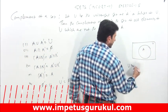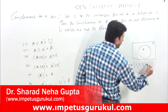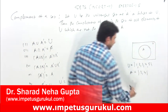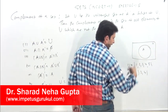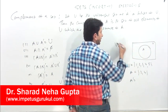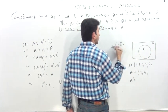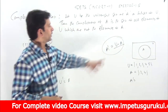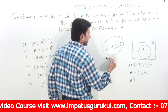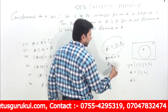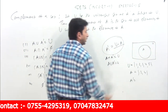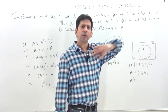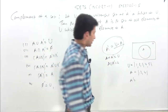Suppose universal set hai {1, 2, 3, 4, 5}, A subset hai jo even numbers hai — {2, 4}. To complement of A hoga. Logically bol sakte hain: universal set minus A equals complement of A. And A plus A complement equals universal set, i.e., A union A complement equals universal set.